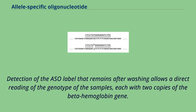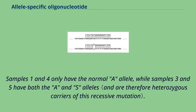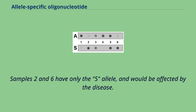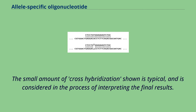Samples 1 and 4 only have the normal A allele, while samples 3 and 5 have both the A and S alleles. Samples 2 and 6 have only the S allele, and would be affected by the disease. The small amount of cross-hybridization shown is typical, and is considered in the process of interpreting the final results.